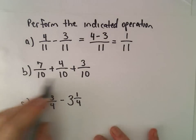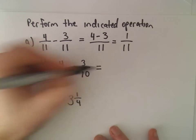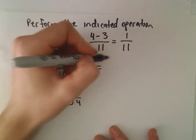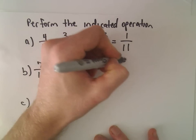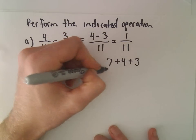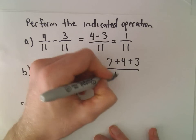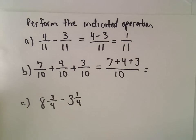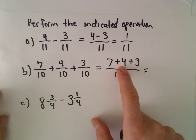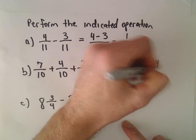The same thing happens if you have multiple fractions, as long as you have the same denominator. So in this case, we would get 7 + 4 + 3, all being divided by 10. So 7 plus 4 is 11, plus 3 is 14 over 10.